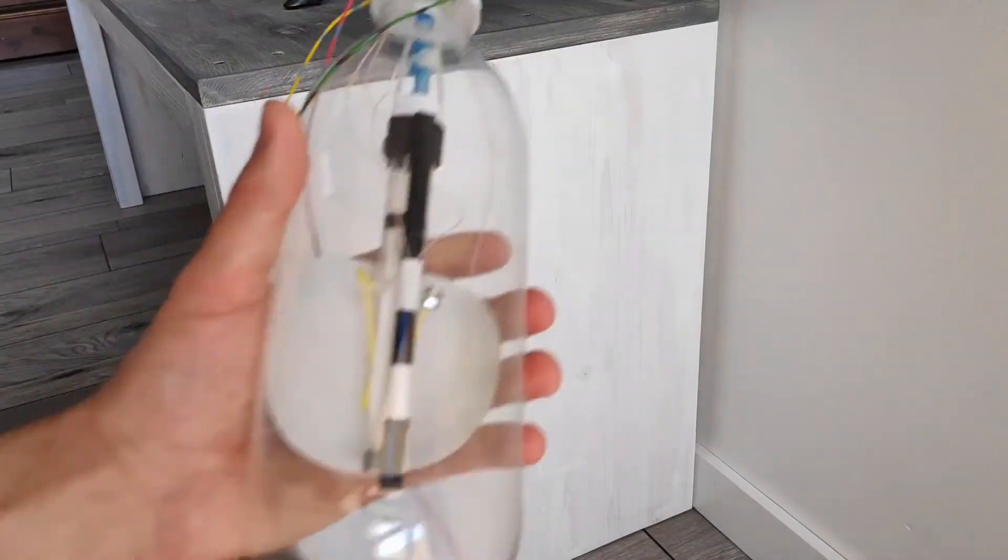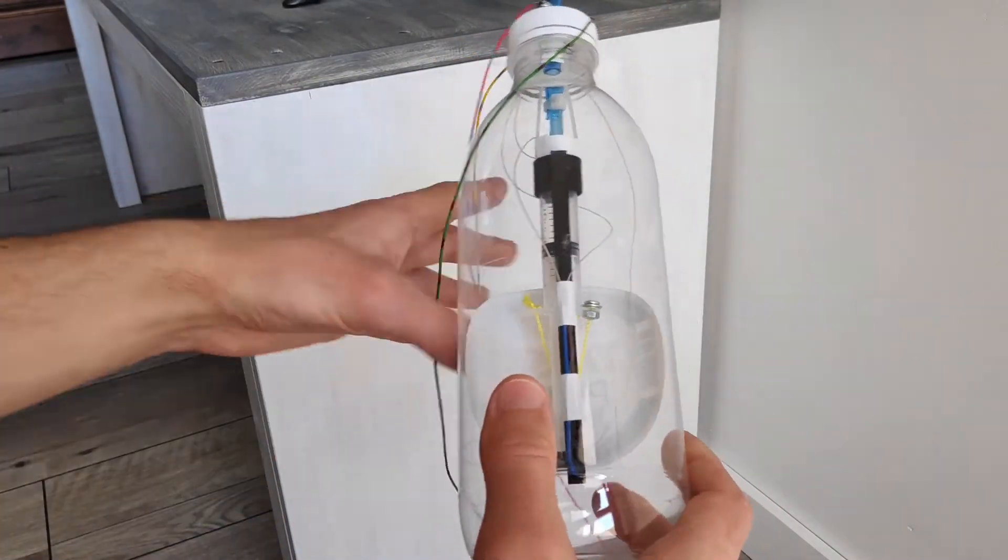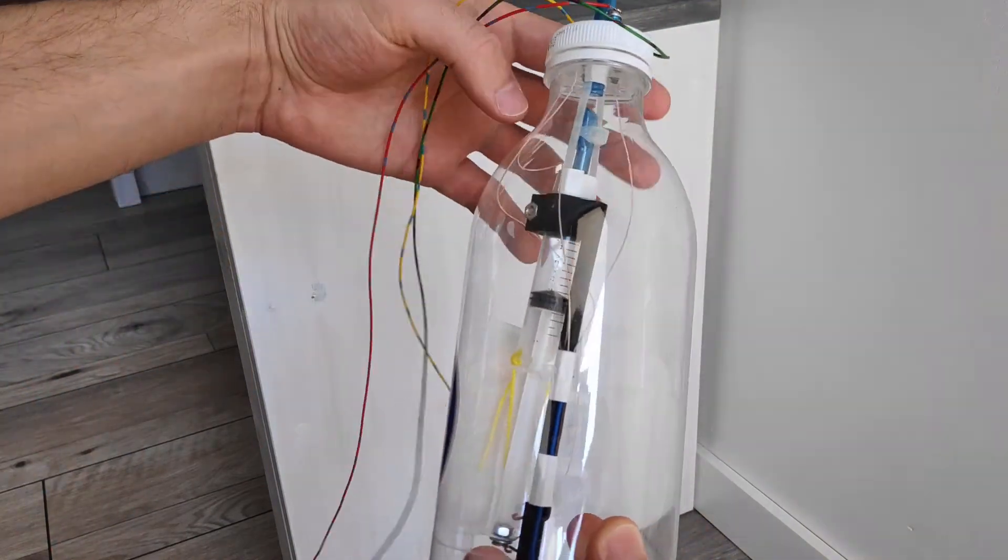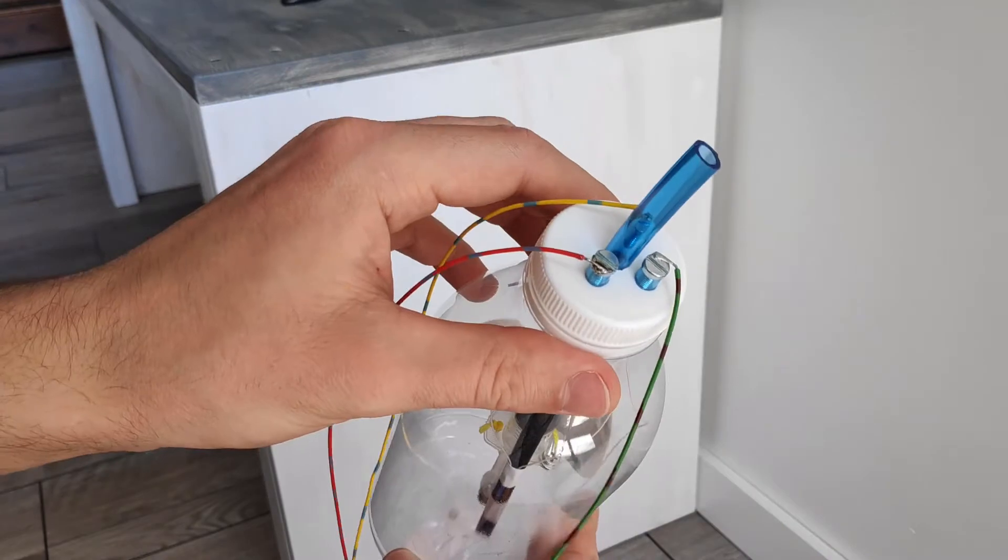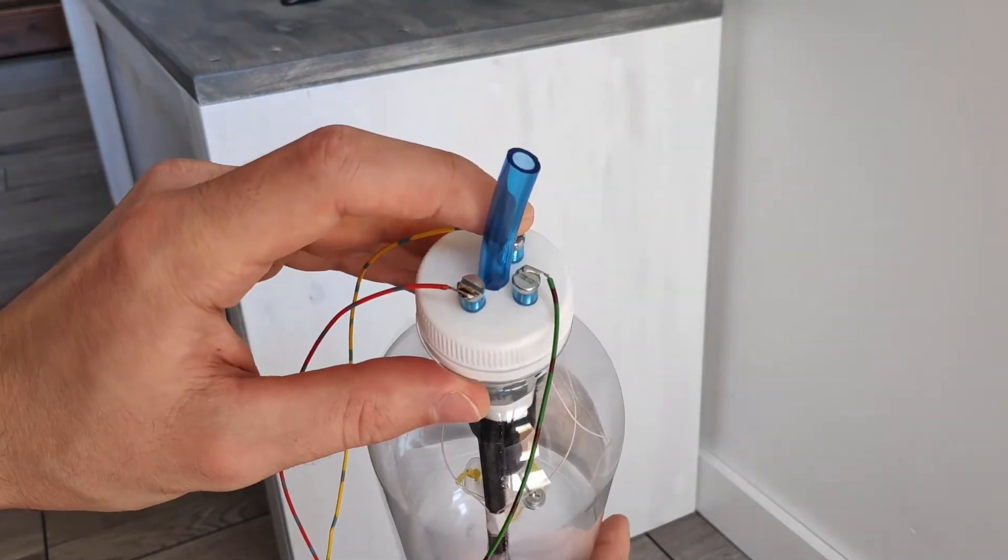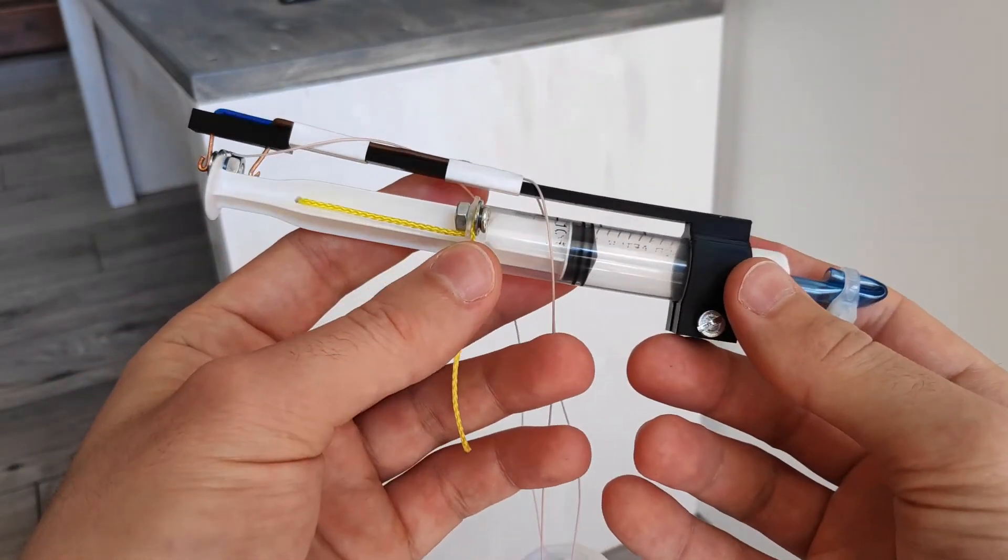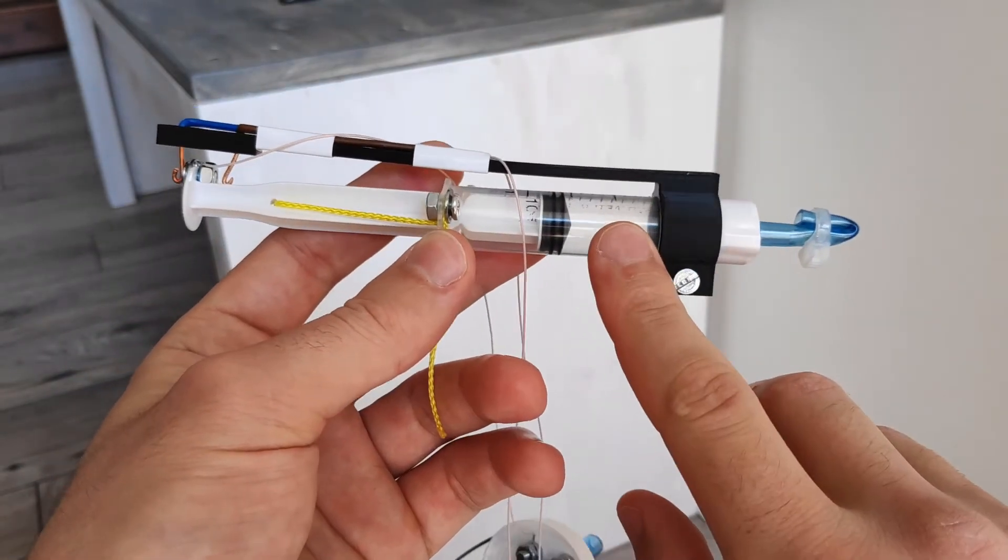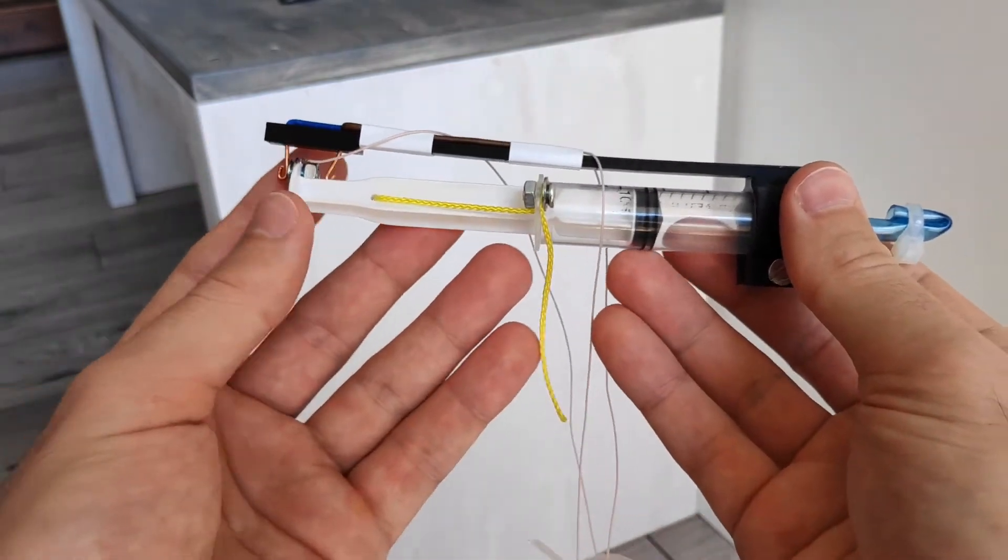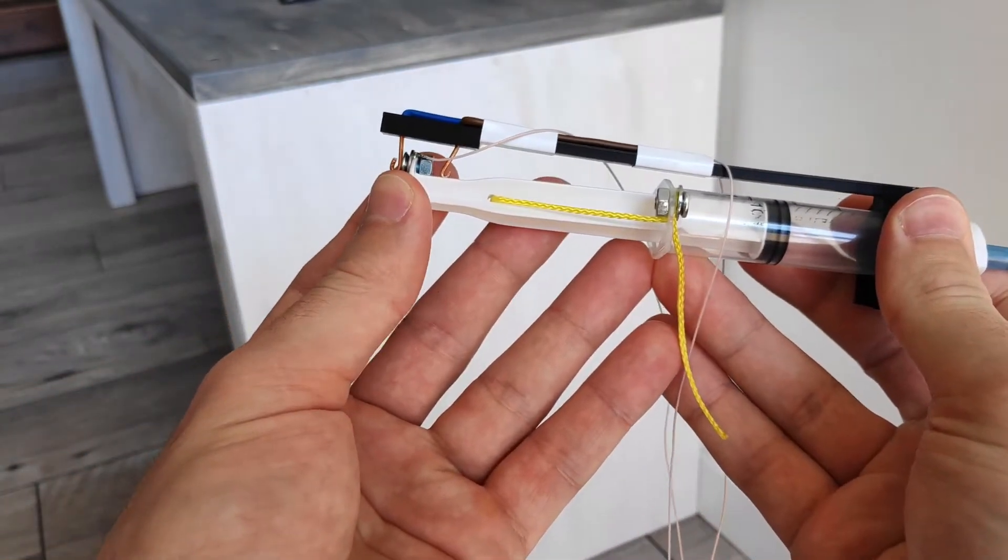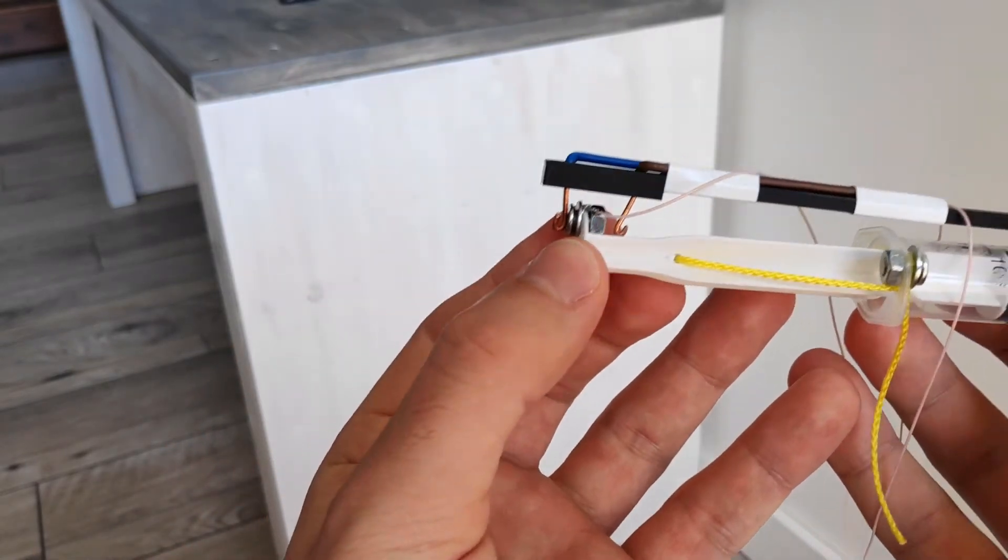My first attempt of making compressed air sensor that didn't go so well was using this kind of bottle that has a syringe inside of it with some wires attached. The main idea behind this was that once the pressure inside the bottle increases there's a pressure difference created between inside and outside of the syringe and that makes the rubber piston to move creating a connection between one of the two contacts.